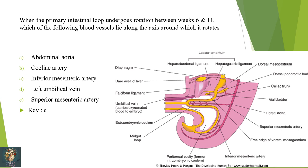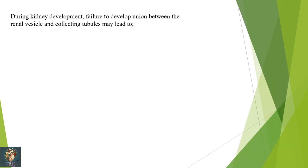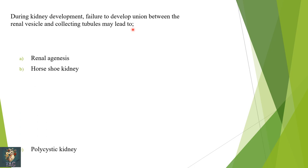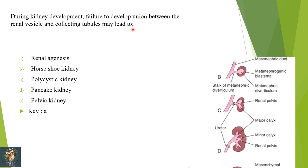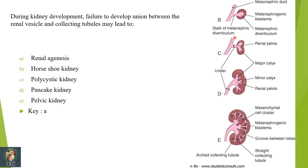Next: during kidney development, failure to develop a union between the renal vesicle and the collecting tubules may lead to — renal agenesis, horseshoe-shaped kidney, polycystic kidneys, pancake kidneys, or pelvic kidneys? The correct option is renal agenesis.